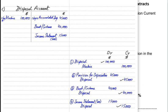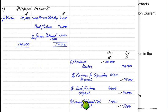The disposal account is a temporary account used only to record gain or loss. It does not have a balance c/d or balance b/d. We just total both sides, and if the disposal account is prepared correctly, both sides should always balance. Whether there is a gain or a loss, both sides of the disposal account should always be equal.